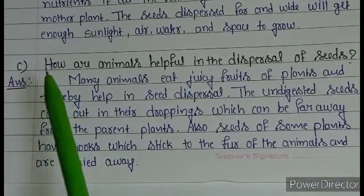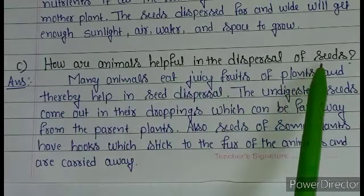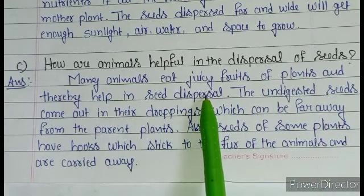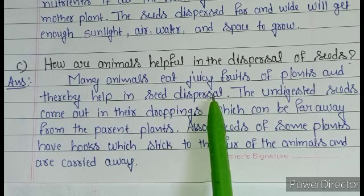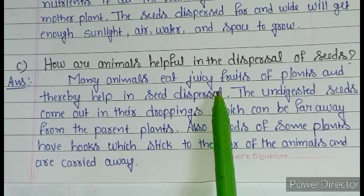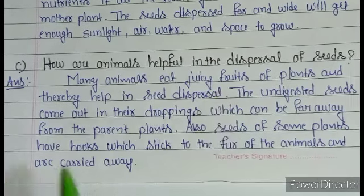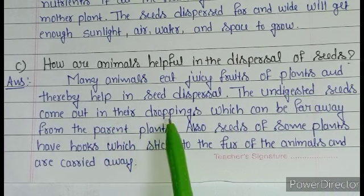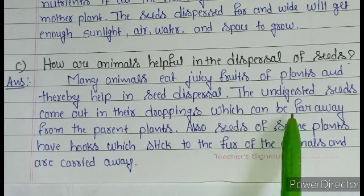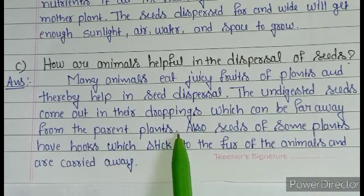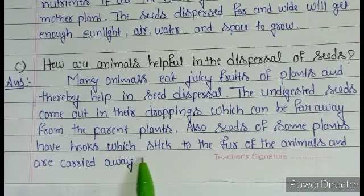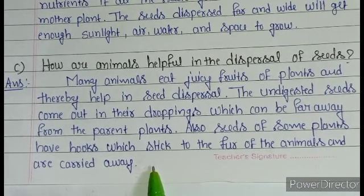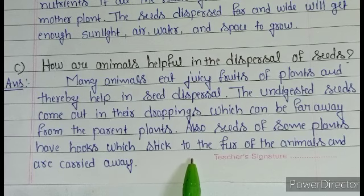Question C: how are animals helpful in the dispersal of seeds? Answer: many animals eat juicy fruits of plants and thereby help in seed dispersal. Some wild animals like bears eat plant products like leaves and fruit and help in seed dispersal. The undigested seeds come out in their droppings — in the form of feces — which can be far away from the parent plants. Also, seeds of some plants have hooks which stick to the fur of animals and are carried away to far places.